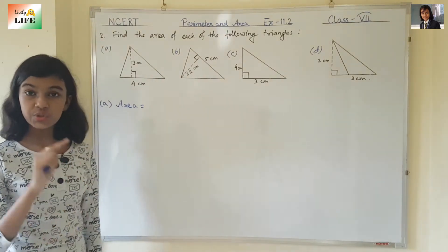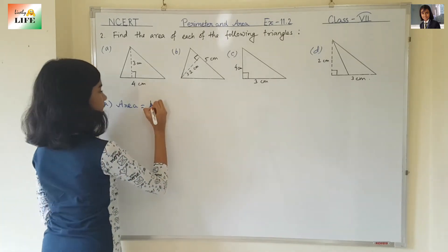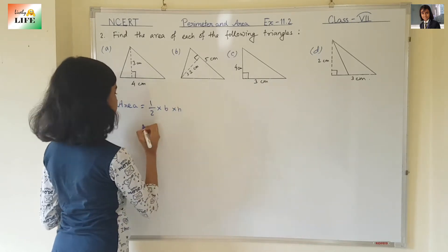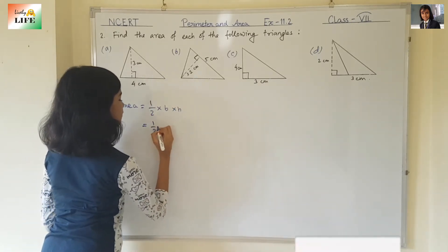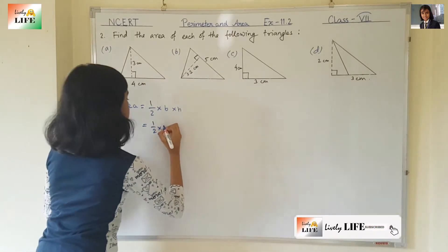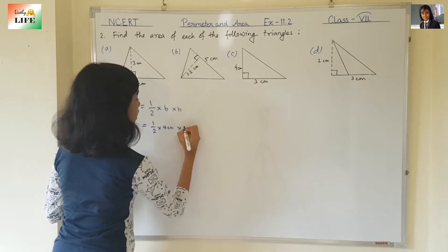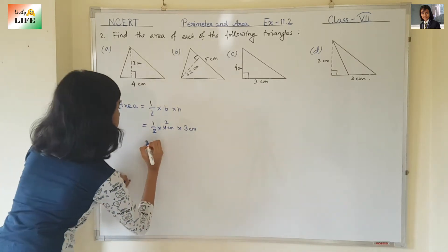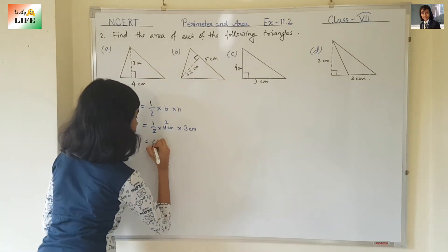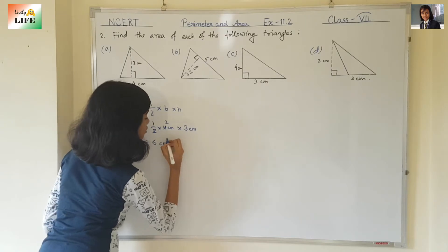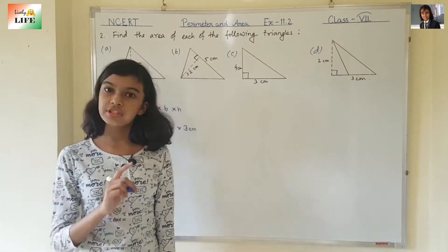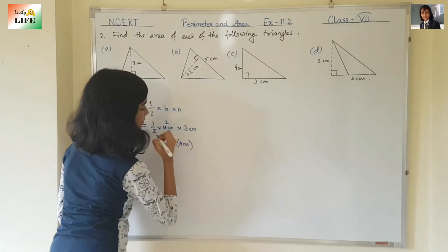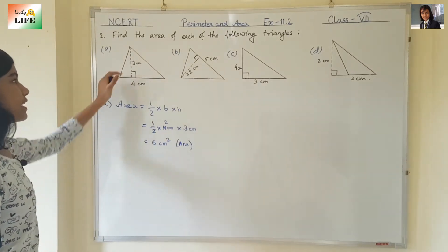Area is half into base into height. Half, one-by-two multiplied by base and height. Half into base — what is the base? Four centimetres. And height? Three centimetres. Two twos are four, two threes are six. Six centimetre square. Because this is area, area's unit is always square — metre square, centimetre square. So this is the answer. Six centimetre square is the area of this triangle.